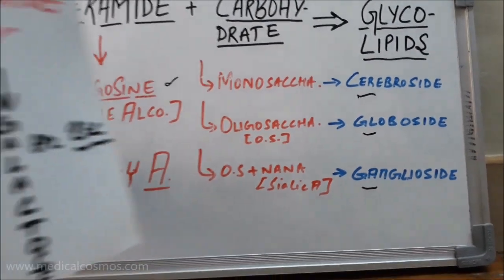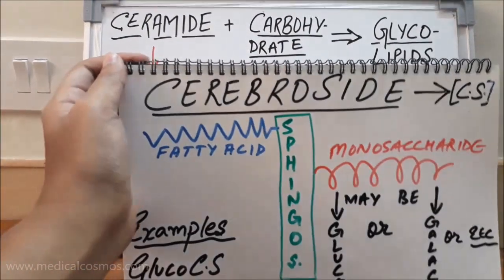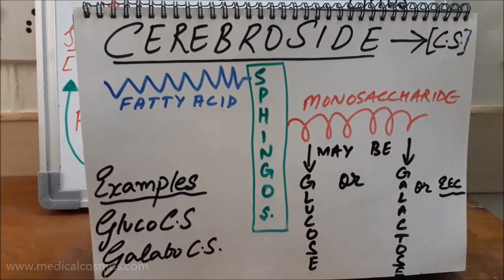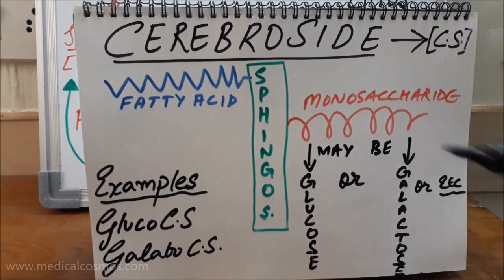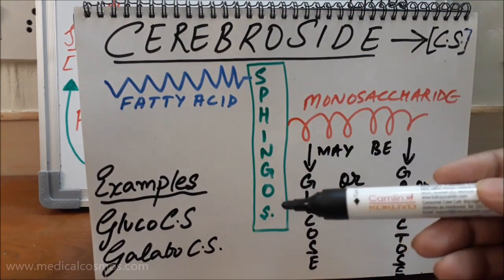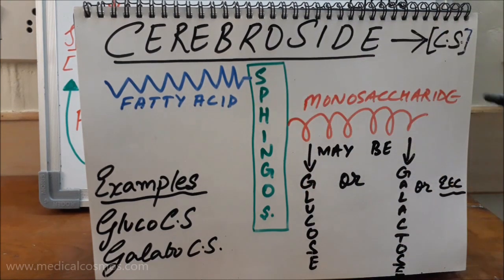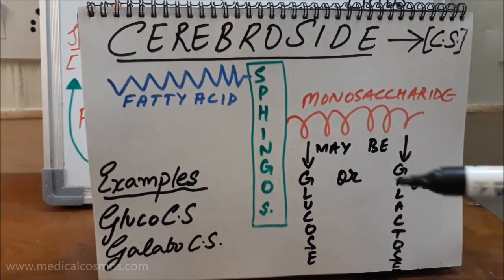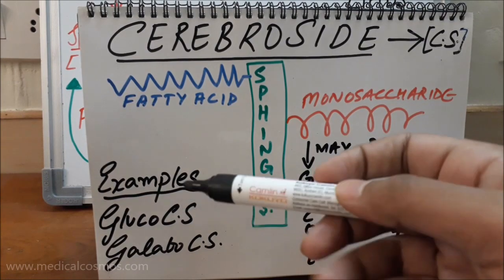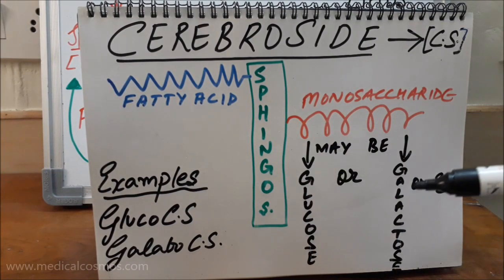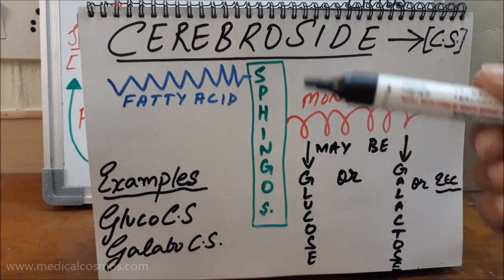Looking at the cerebroside structure in more detail: we have a sphingosine backbone, a fatty acid as already discussed, and a monosaccharide. If this monosaccharide is glucose, the example is glucocerebroside; if it is galactose, then it is galactocerebroside. The basic backbone is most important as it classifies its biochemical aspects.